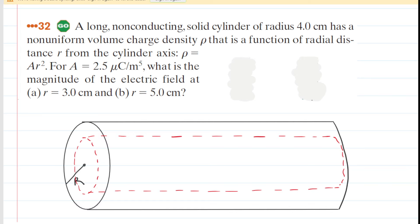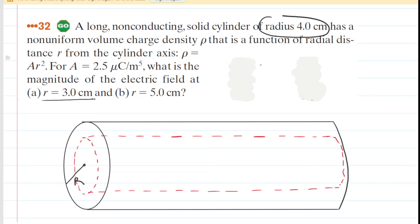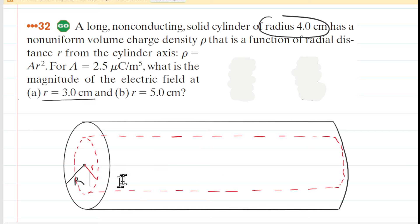We have a long non-conducting solid cylinder drawn in black, with a radius of 4 centimeters labeled capital R. In Part A, we have to calculate the electric field at a distance of r equals 3 centimeters. Notice that lowercase r is smaller than uppercase R. We've drawn a cylindrical Gaussian surface — that red dashed cylinder — because its shape coincides with the shape of the solid cylinder. The great challenge is to figure out how much charge is enclosed inside that Gaussian cylinder.